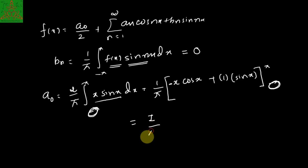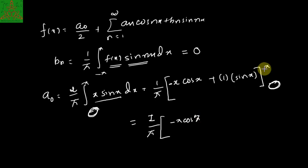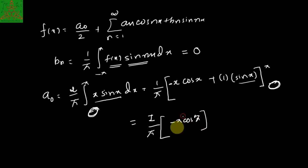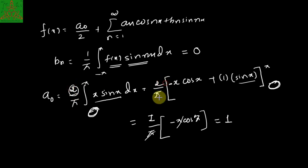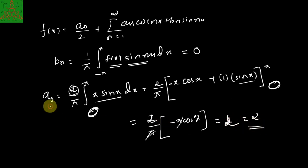So this is 1/5 times the integral. Substituting the limit 5: this gives minus 5·cos(5) times minus 1 again. Substituting sin: instead of x it will be 0, and 0 into anything is 0. Assuming the 5 cancels out, the answer will be 1. With the factor of 2, the final answer is 2. So a₀ = 2.